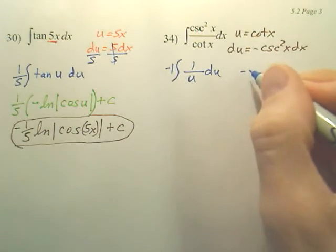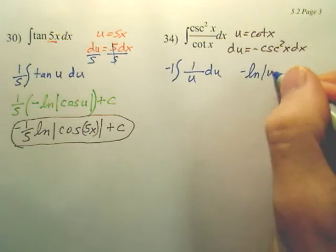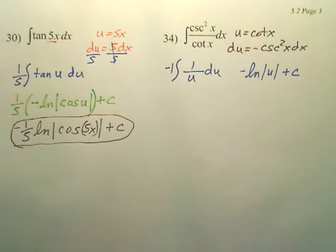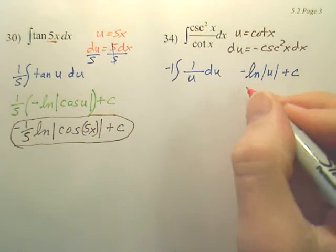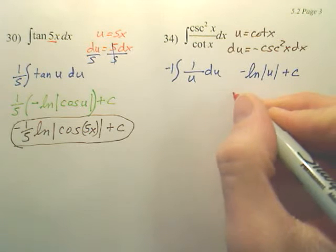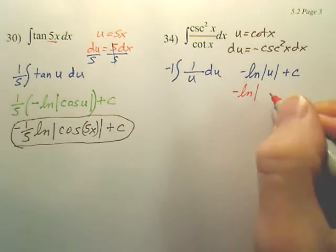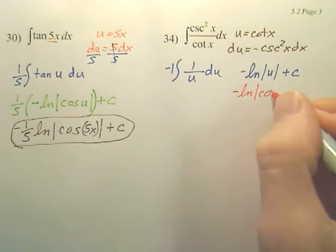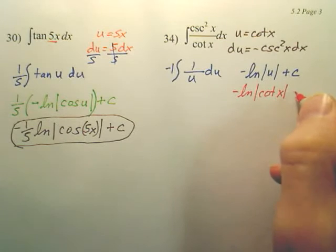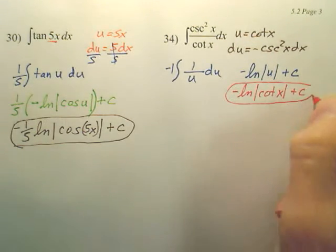So when you integrate this, you end up with negative ln u plus c. Which is negative ln, and u is cotangent x plus c. There's your answer.